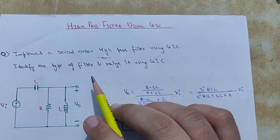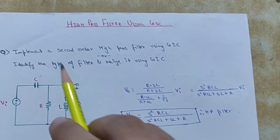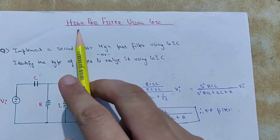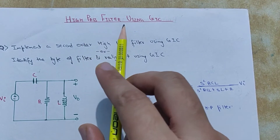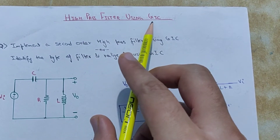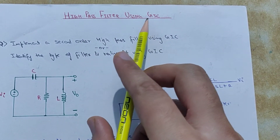Welcome to another tutorial by SupremeTuber. In this video, we will be discussing how to implement a high pass filter using a generalized impedance converter.